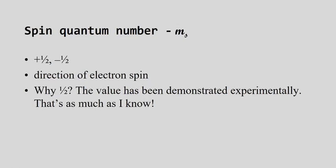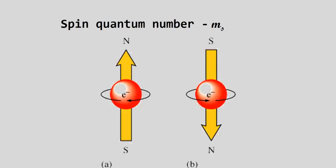The final quantum number is the spin quantum number, M sub S. The spin quantum number can only be one of two things: positive one-half or negative one-half. It tells the direction of electron spin. The value was demonstrated experimentally, and that's as far as we'll go with it.